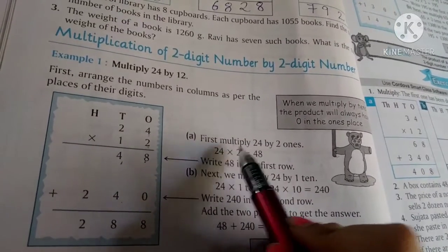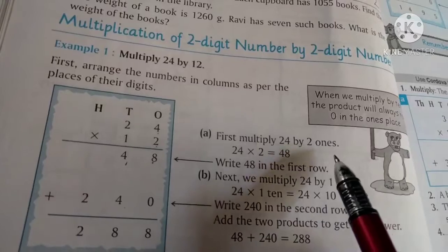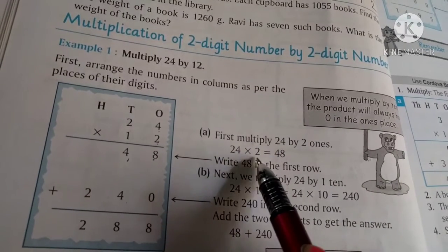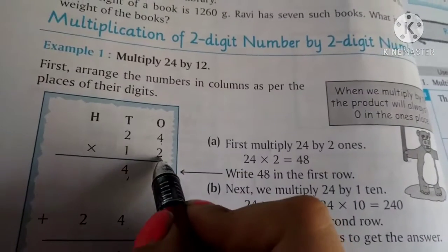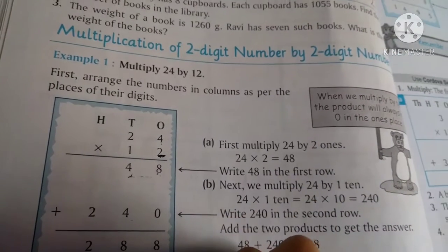First, multiply 24 by 2 ones. 24 multiply by 2 is equal to 48. So our answer is 48 in the first step.